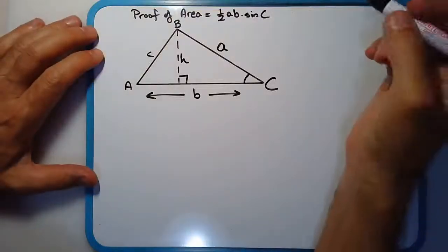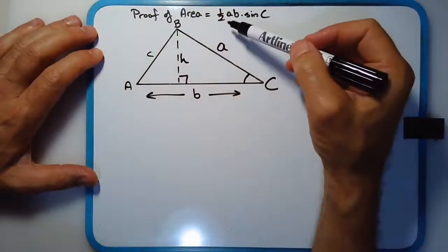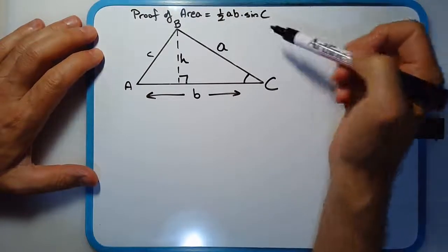This is the proof of the area of a triangle being given by the formula half AB sin C.